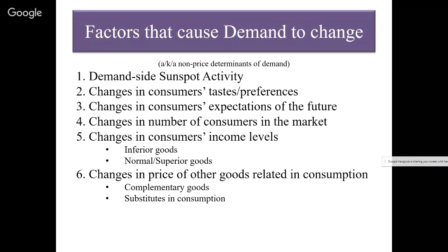Two or more products are called substitutes in consumption if a consumer is able to use one product in the place of the other. Some products are close substitutes while others are poor substitutes. I'm a coffee drinker and prefer half and half, but I keep a jar of Cremora — a powdered coffee creamer — in case I run out and don't have time to go to the grocery store. It's not the best substitute, but I prefer it to drinking black coffee. It is a close substitute in consumption, though not a great one.